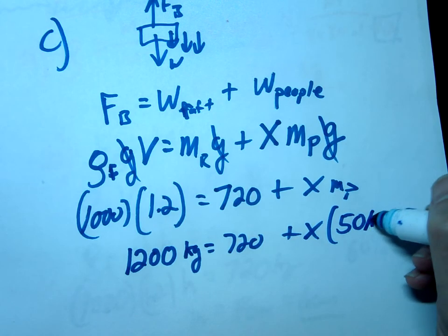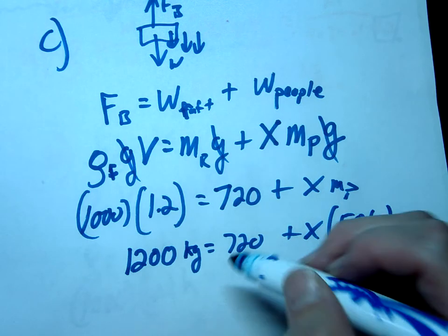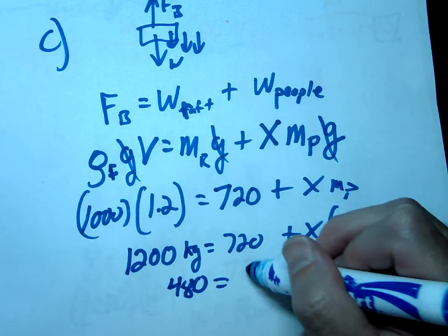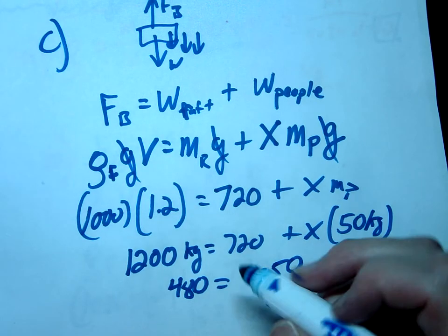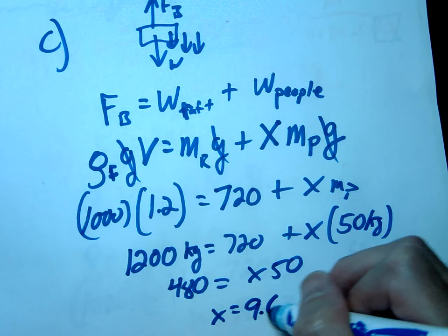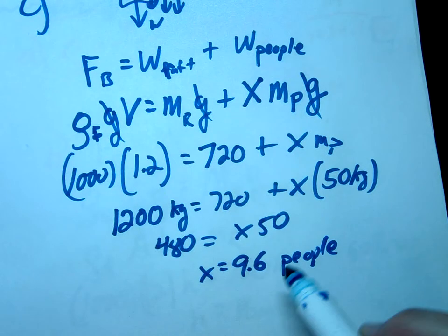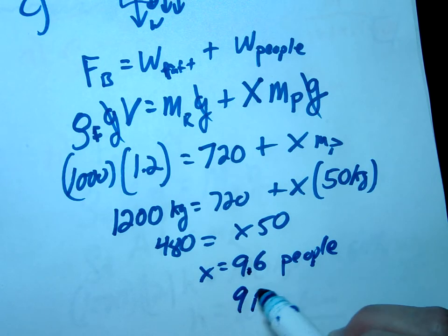So when you subtract this you're gonna get 1200 minus 720, that's 480, should equal x times 50. And that gives us, if you actually do that, x equals 9.6 people.